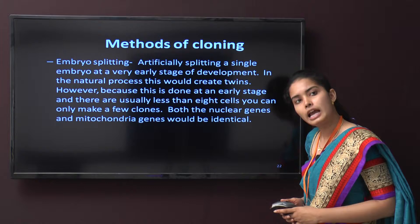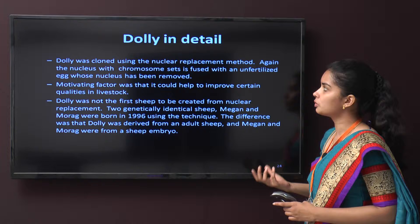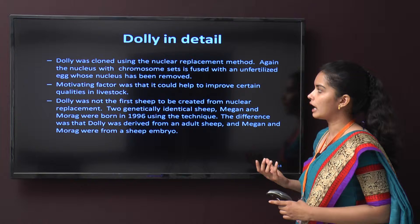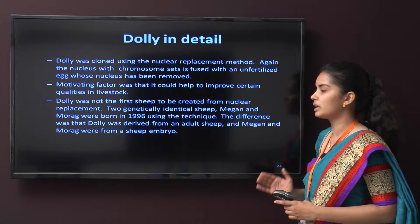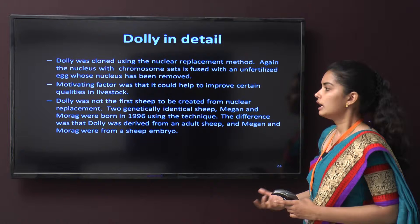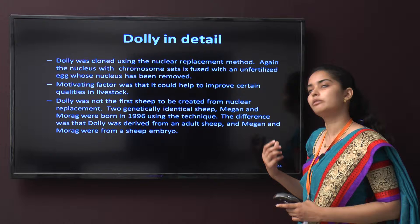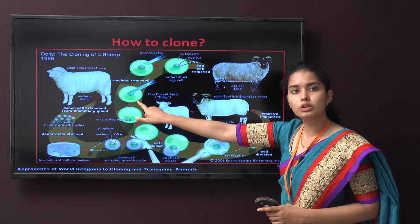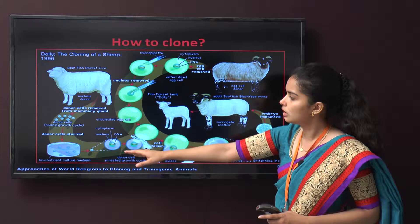Dolly in detail: Dolly was cloned using the nuclear replacement method. The nucleus with the chromosome set is fused with an unfertilized egg from which the nucleus was removed. Dolly was not the first sheep created by nuclear replacement — two genetically identical sheep, Megan and Morag, were born in 1996 using the same method. The difference was that Dolly was derived from an adult sheep, while Megan and Morag were derived from a sheep embryo. A clone is thus formed from a single cell's nuclear set.